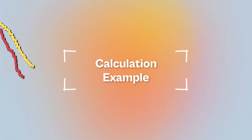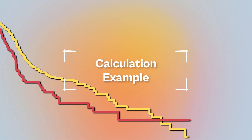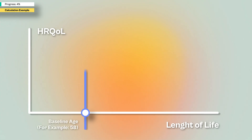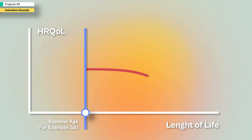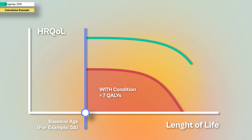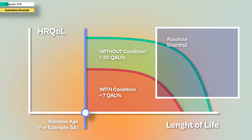Let's go through a practical example of how the severity modifier is calculated. Imagine patients with a certain condition are expected to live the rest of their lives with a total of 7 QALYs on the standard of care. People of the same age and sex in the general population would expect 20 QALYs. The absolute shortfall is calculated as 20 minus 7, which gives 13 QALYs.